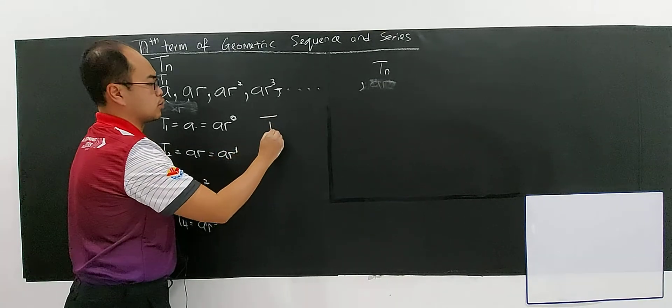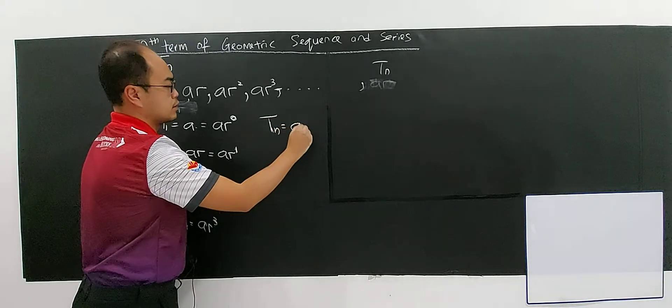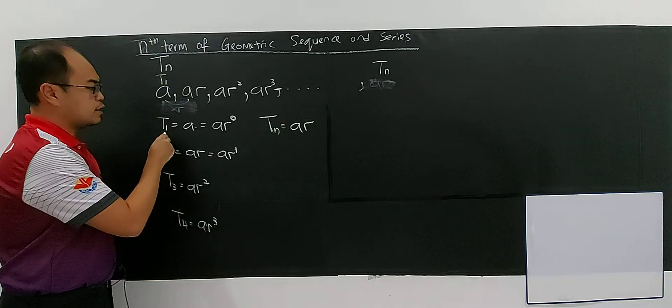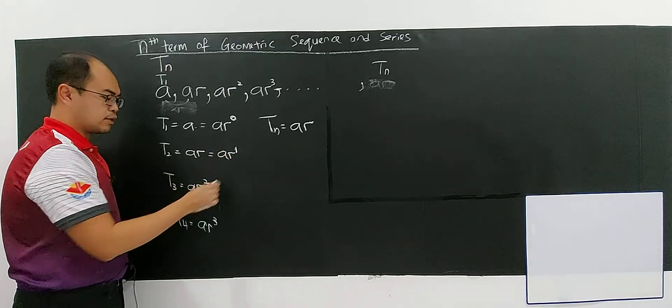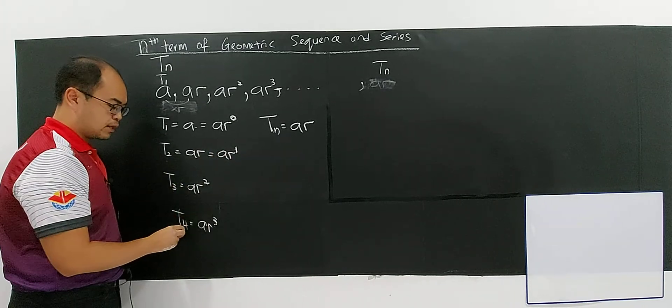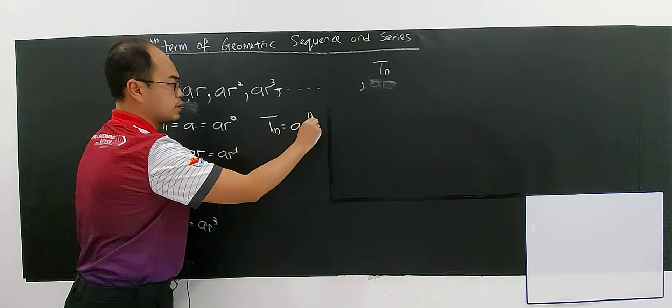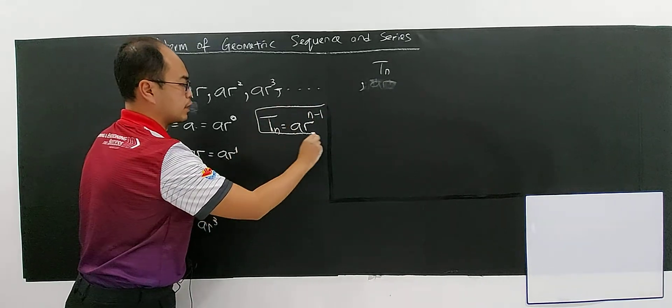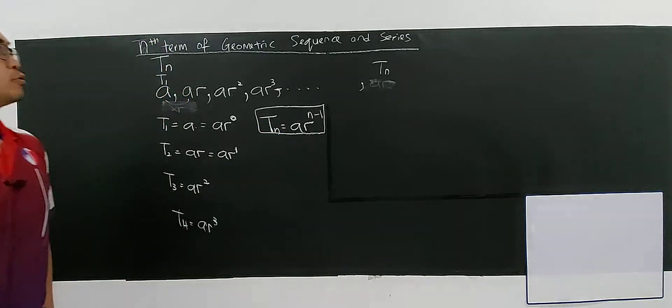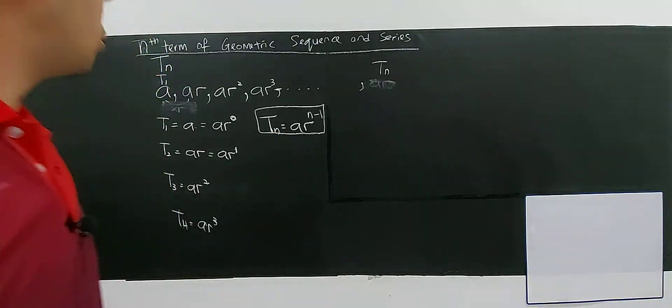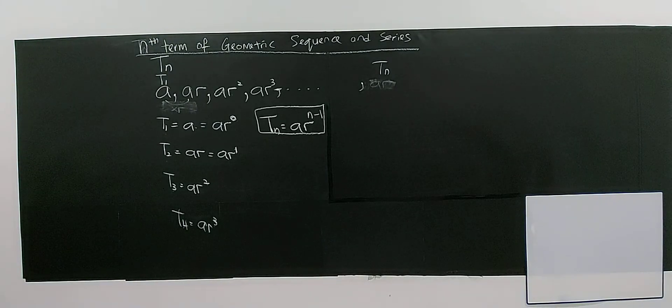So if I'm asking you, what is your n-term? Very easy. AR. If 1, it will be 0. If 2, it will be 1, meaning 2 minus 1. This is 3 minus 1. This is 4 minus 1. So if this is n, this will be n minus 1. This is the formula for n-term of a geometric sequence. Hope you understand the derivation.